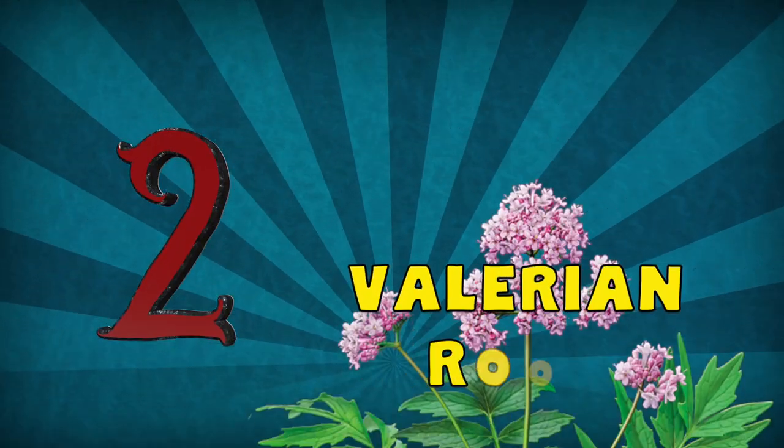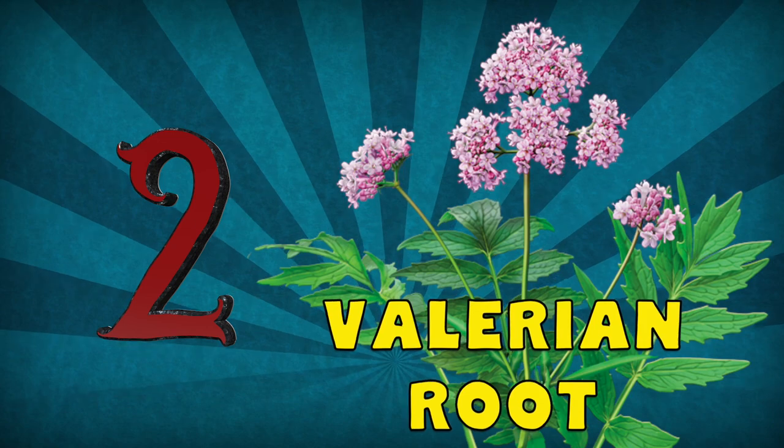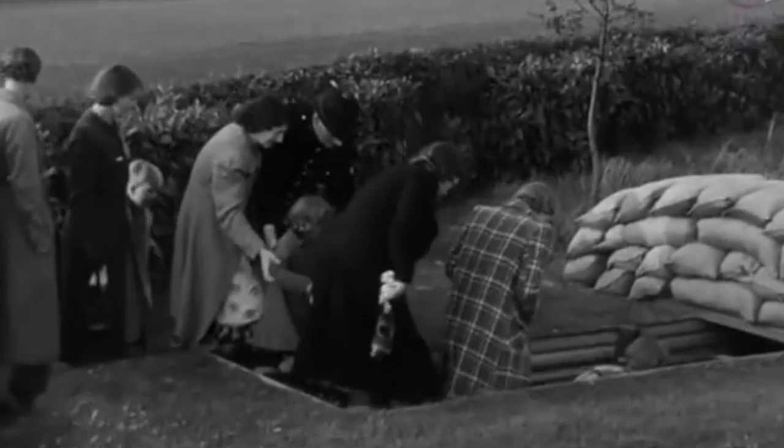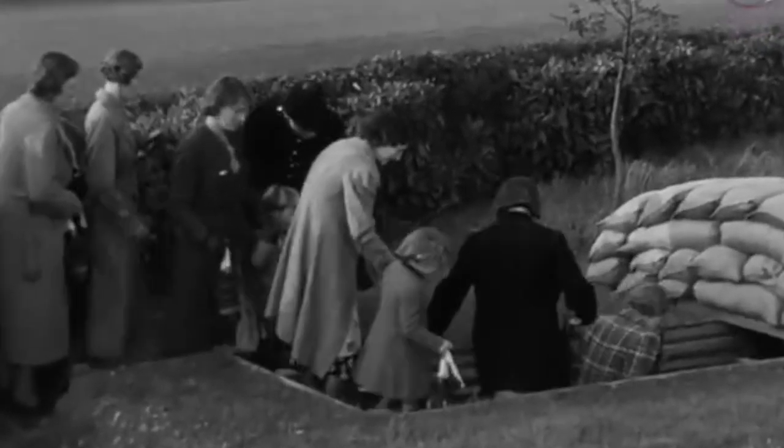Number 2, Valerian Root. Considered one of the best for calming a racing mind. Historically, Valerian was used in England during World War II to help relieve stress and anxiety caused by air raids. You can find Valerian in capsule or liquid form. Valerian Root is also commonly used as a tea.